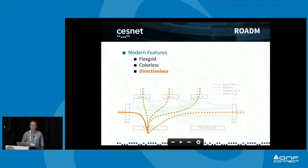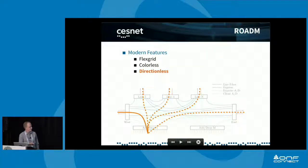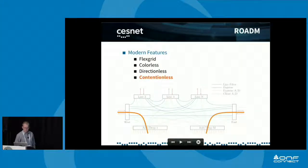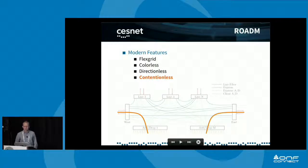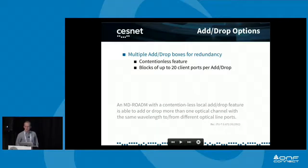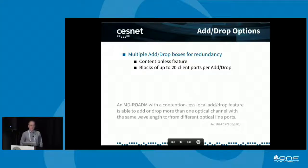Another property is directionless — a client port is directionless if you can reach any of the line directions with your signal; there can't be any hard-coded direct connections. A contentionless ROADM can terminate the same wavelength coming from different directions at the same time. We achieve this via having multiple add-drop boxes, in accordance with the ITU-T definition, rather than using M×N WSSs, which have certain disadvantages.